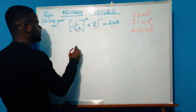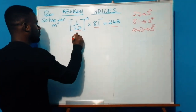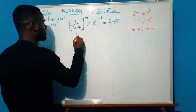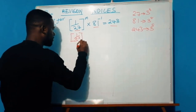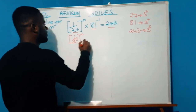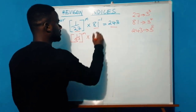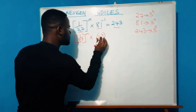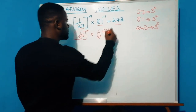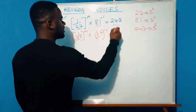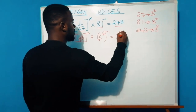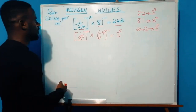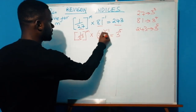Plugging these in, we get: one over 3 raised to power 3, in brackets raised to power m, times 3 raised to power 4 — remembering that 81 is raised to power negative 1 — all equivalent to 3 raised to power 5.